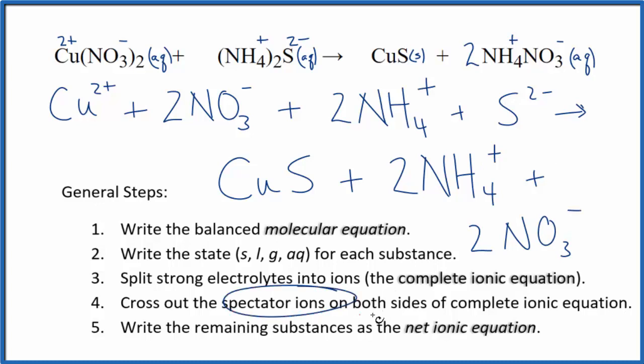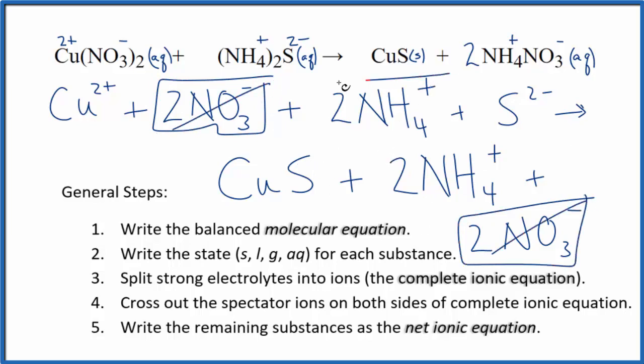Now we'll cross out spectator ions. They're on both sides of that complete ionic equation. So in the reactants, I see here are two nitrates. And then in the products here, we have two nitrates. Those are spectator ions. We can cross those out. We also have two ammonium ions in the reactants and again here in the products. These are spectator ions. Cross them out. What's left, that's the net ionic equation.